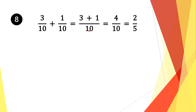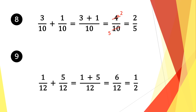We do the same for the second fraction: 10 divided by 10 is 1, and 1 times 1 is 1. We add the numerators: 3 plus 1 is 4, and we bring along the denominator 10. Now top and bottom are divisible by 2: 4 divided by 2 is 2 and 10 divided by 2 is 5. So our solution is 2 fifths.